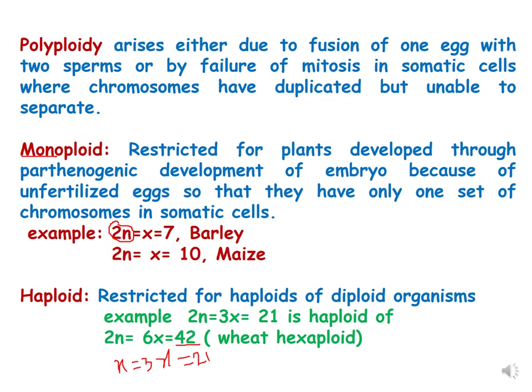If the somatic number represents 10 and 10 is only present in the monovalent state, we will call it a monoploid. While haploid is restricted for organisms formed from diploid organisms. For example, 2n = 3x = 21 is a haploid of the diploid plant where 2n = 6x = 42. It is not a diploid but it is a hexaploid plant.